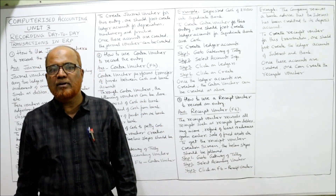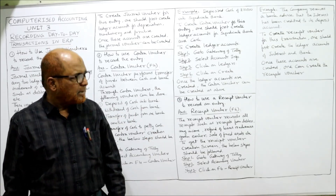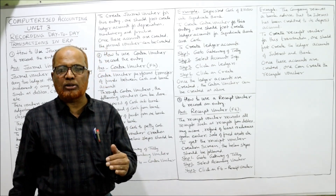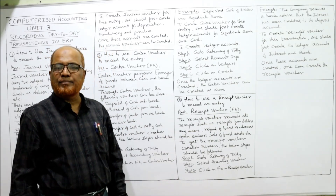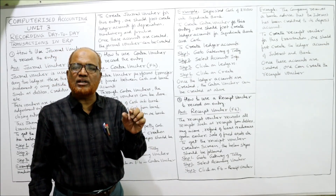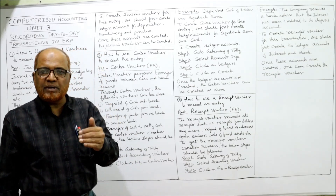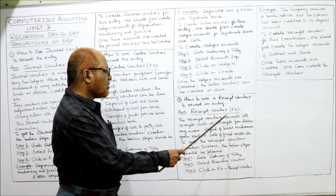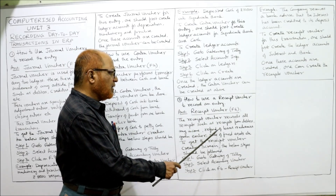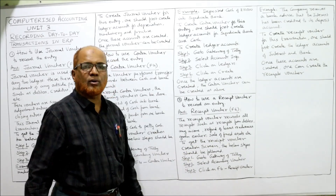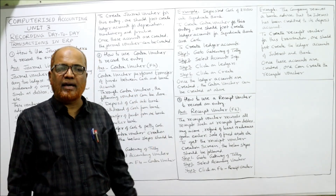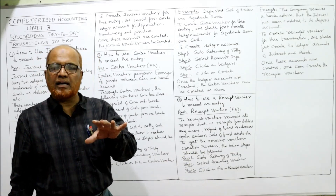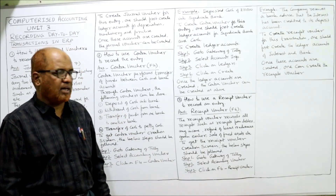That's the end of how to use the contra voucher F4. Now the last question: how to use a receipt voucher to record an entry. The receipt voucher is function key F6. Receipt means any amount — cash or check — received. The receipt voucher records all receipts such as receipts from debtors, any income, refund of loans or advances given earlier, sale of fixtures, etc. Whenever cash is received, it will be recorded in the receipt voucher.